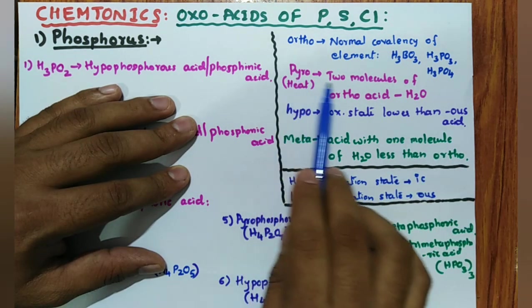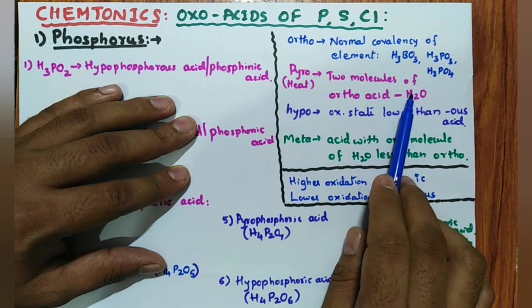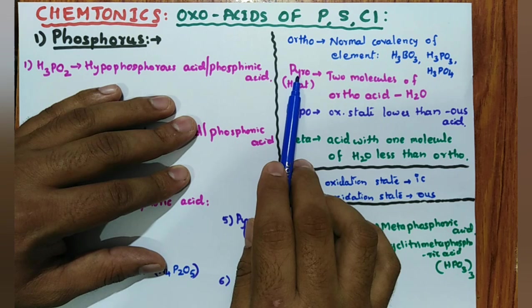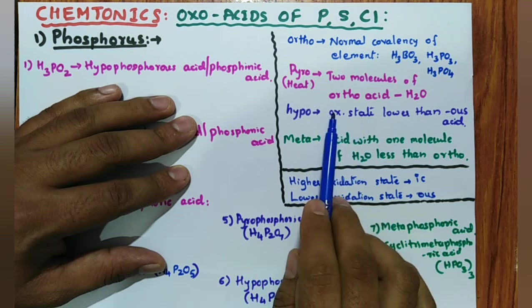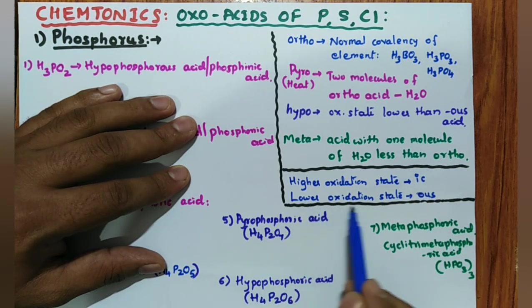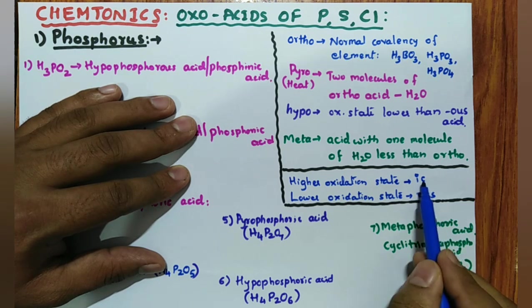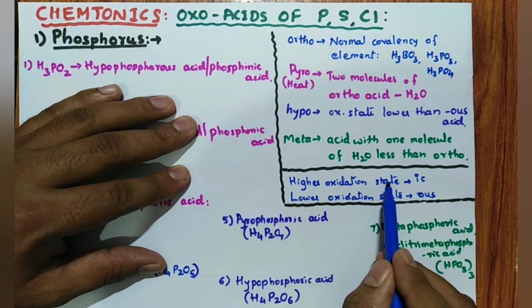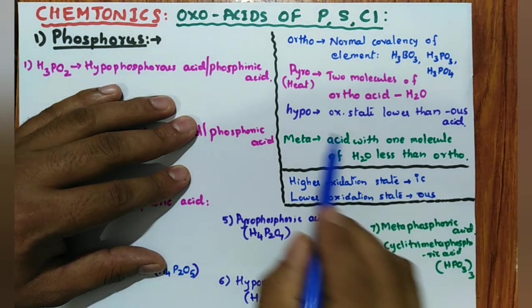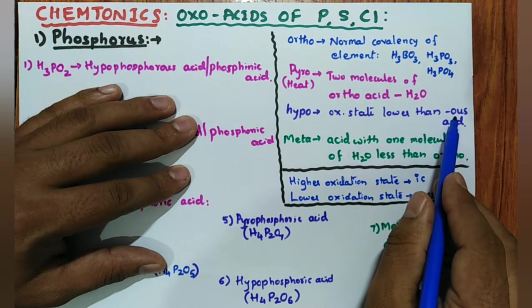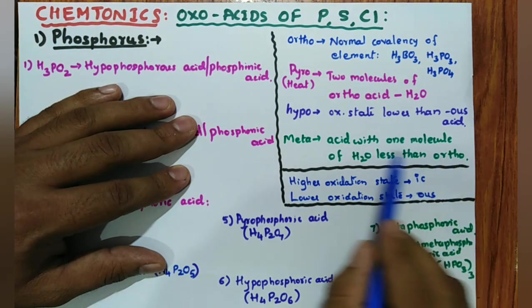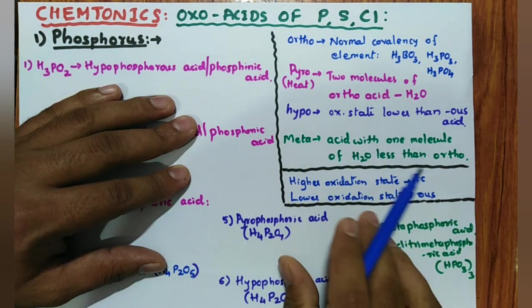Pyro means remember heat — whenever you take two molecules of orthoacid and remove one water molecule, you get the molecule called pyroacid. Hypoacid has an oxidation state lower than the S-acid. S-acid has a lower oxidation state than the IC-acid, which is the higher oxidation state acid — for example, sulfuric acid vs. sulfurous acid. So hypo means oxidation state lower than the S-acid. Meta means an acid with one molecule of water less than the ortho.